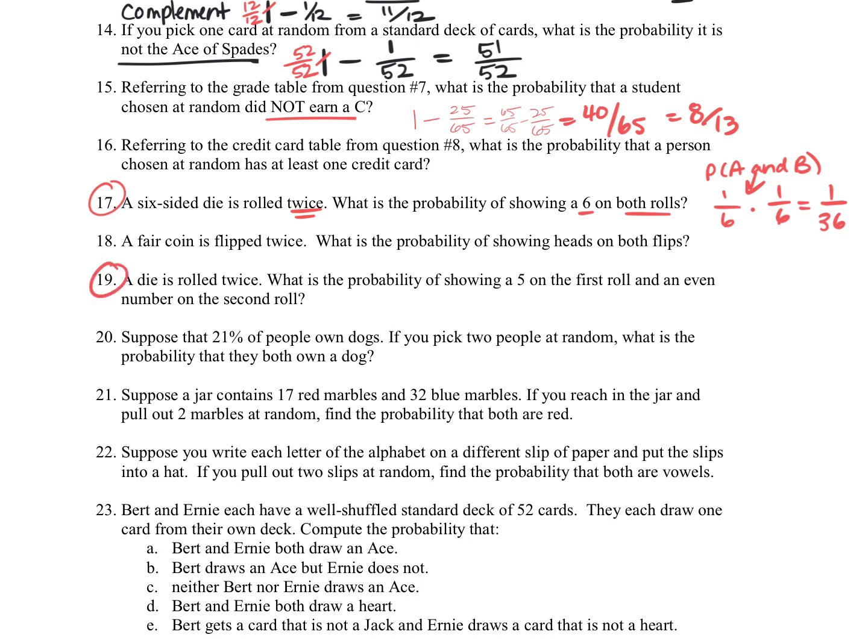For number 19, a die is rolled twice again. What is the probability of showing a 5 on the first roll and an even number on the second roll? So 5 on the first roll, again, we're talking about probability of A and B, which the 5 is the first one. That's 1 out of 6 times event B, which is getting the even number. So that's getting a 2, a 4, or a 6, which happens 3 out of 6 ways. So we're going to get 3 out of 36, which reduces to 1 over 12.